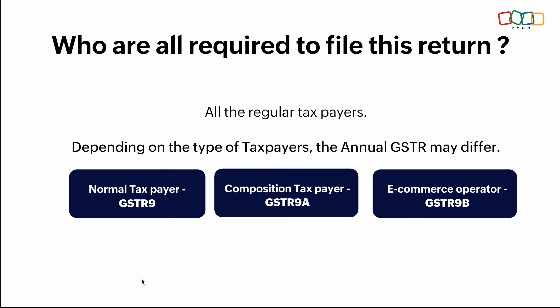Who is required to file this return? GSTR 9 is to be filed by a person registered as a regular taxpayer including SEZ units or SEZ developers, and taxpayers who have withdrawn from the composition scheme to normal taxpayer any time during the financial year. This is mandatory for taxpayers having a turnover above 2 crore per year. Depending on the type of taxpayer, the annual return differs — for normal taxpayers it is GSTR 9, for composition taxpayers it is GSTR 9A, and for e-commerce operators it is GSTR 9B.